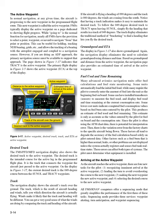Ground speed and ETA: the display in Figure 3-17 also shows ground speed. The navigation display eliminates the need to calculate ground speed using distance and time. Based on ground speed and distance from the active waypoint, the navigation page also provides an estimated time of arrival at the active waypoint. Fuel used and time remaining: many advanced avionics navigation units offer fuel calculations and fuel state monitoring. Some units automatically load the initial fuel load, while many require the pilot to correctly enter the amount of fuel into the unit as the beginning fuel on board. Some can have installed transducers (sensors) to measure the fuel used, and display fuel used and time remaining at the current consumption rate.